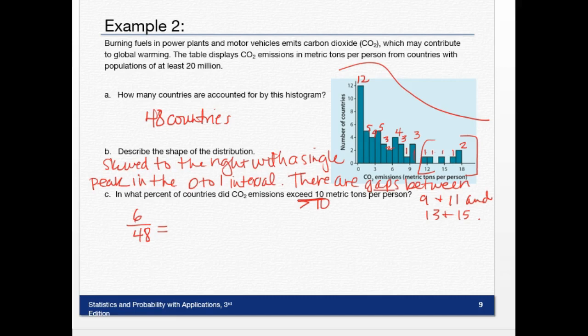So to get my percentage, I divide, and I get 12.5%. That's how you answer a question using the histogram. We'll do this again in class, and then you'll have some practice.